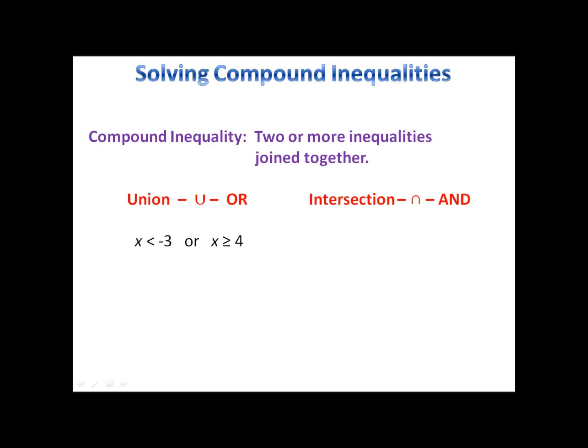If we have a union, for example x is less than negative 3 or x is greater than or equal to negative 4, we can graph that on the number line. All the shaded area, whether it's blue or red, represents the union of these two inequalities. Remember, a union is when you take the elements of both sets and combine them together.